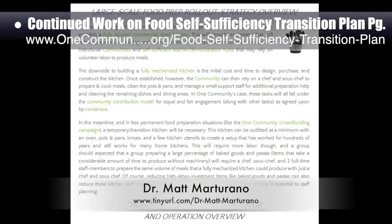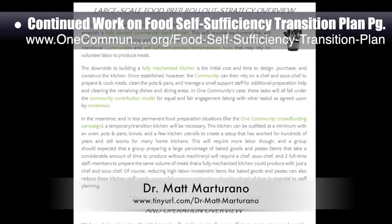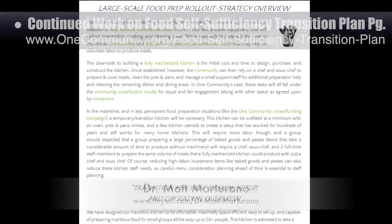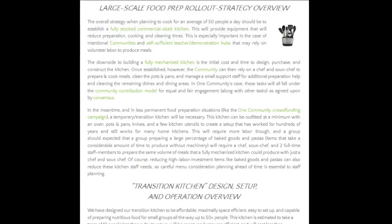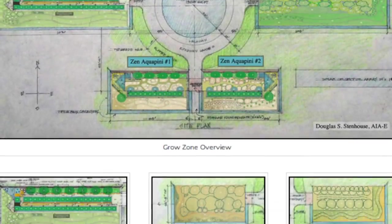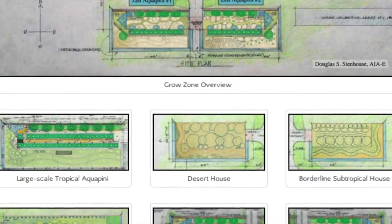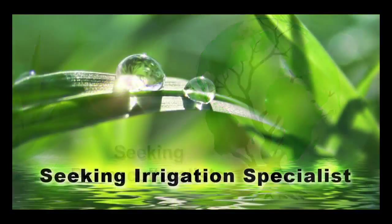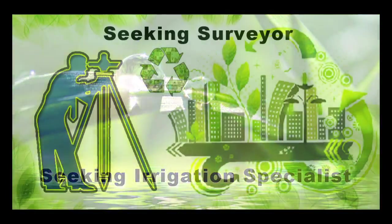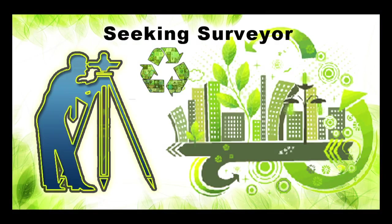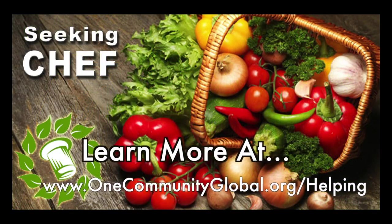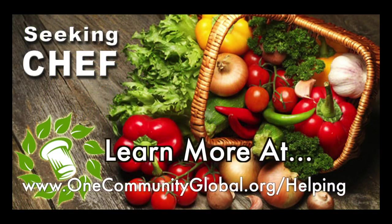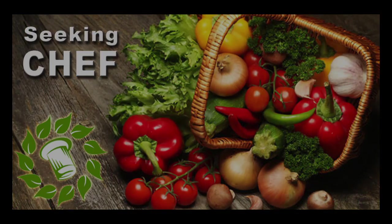This week, we had an additional pioneer proofread and edit the page. The page is now approximately 97% complete. In this area of our open-source project, we are seeking permaculturalists, an irrigation specialist, a surveyor, and a chef to join our team as either consultants to the project or pioneers who will be moving onto the property with us.